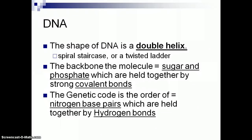So the shape of DNA is called a double helix, or some people call it the spiral staircase or twisted ladder. The backbone, which is the outside of the molecule, is made up of sugar and phosphates. They alternate, phosphate, sugar, phosphate, sugar. And they're held together by covalent bonds. That's the strongest kind of bond. And then the part that we call the genetic code is those nitrogen base pairs, which are in the middle of the molecule, and they're held together by hydrogen bonds. Again, if you need to pause this, you can pause it to write everything down.